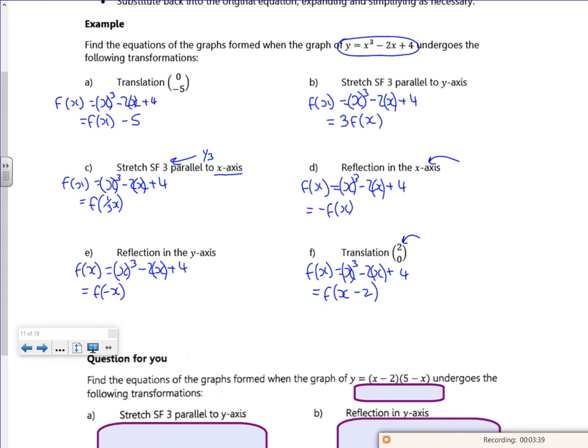Right then. So all I'm doing is taking 5 off. So I've got my x cubed minus 2x plus 4 minus 5. So it gives me my new graph is x cubed minus 2x minus 1.